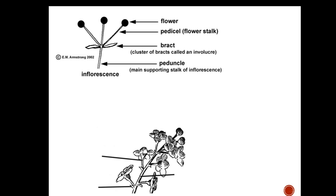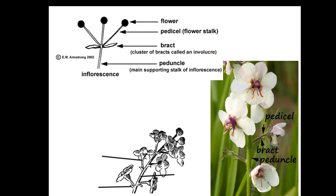Inflorescence is a collection of flowers. The peduncle is a flower stalk; the peduncle is the supporting stalk of an inflorescence. A bract is a modified leaf, and a cluster of bracts is called an involucre. In this picture you can see the peduncle below the collection of flowers; there's your peduncle, your bract, and the peduncle supporting each individual flower.